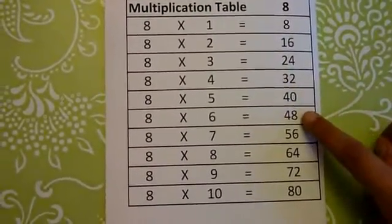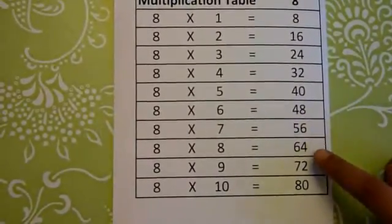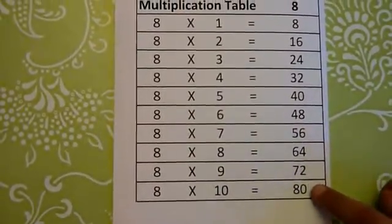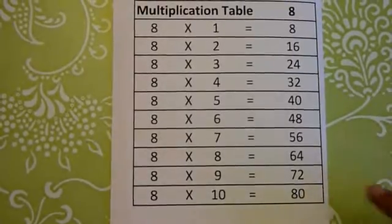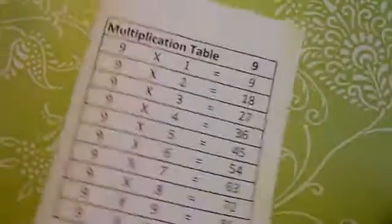8 6s are 48, 8 7s are 56, 8 8s are 64, 8 9s are 72, 8 10s are 80. Next we're going to go on to multiplication table 9.